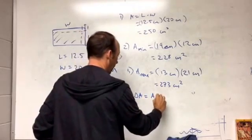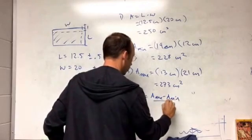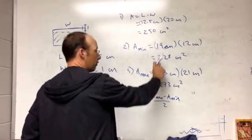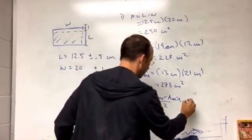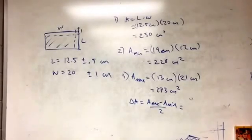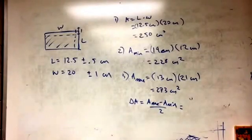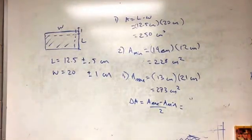So that's the average deviation of these two from that, essentially. Okay, so if I put that in my calculator, I get 273 minus 228 divided by 2, so I get 22.5 centimeters squared.